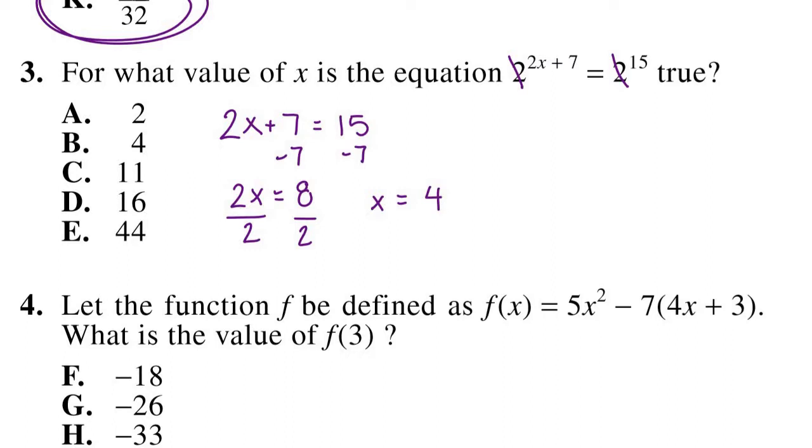Now if we were to take this 4 and plug it back in up here, when you do 2 times 4 is 8 plus 7, well that's 15. So both of these would be equal to 2 to the 15th power. So that is true and that is our answer. So B, 4 is our answer.